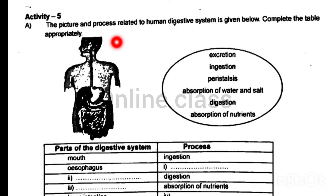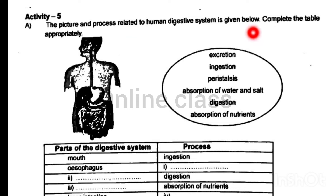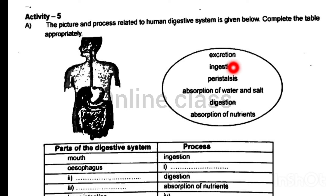The picture and process related to the human digestive system is given below. Complete the table appropriately. The processes include: excretion, ingestion, peristalsis, absorption of water and salt, digestion and absorption of nutrients.